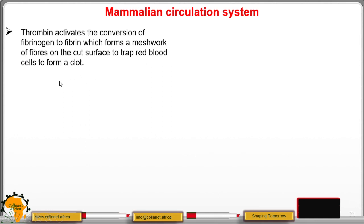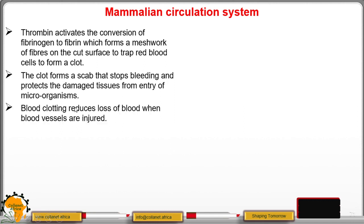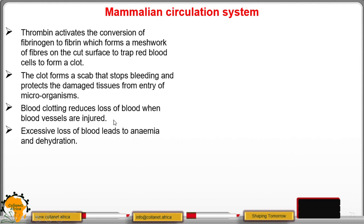Thrombin activates the conversion of fibrinogen into fibrin, forming a meshwork of fibers on the cut surface to trap red blood cells, hence a clot is formed. The clot forms a scab that stops bleeding and protects damaged tissues from entry of microorganisms. Blood clotting is important because it reduces loss of blood when a blood vessel is injured.